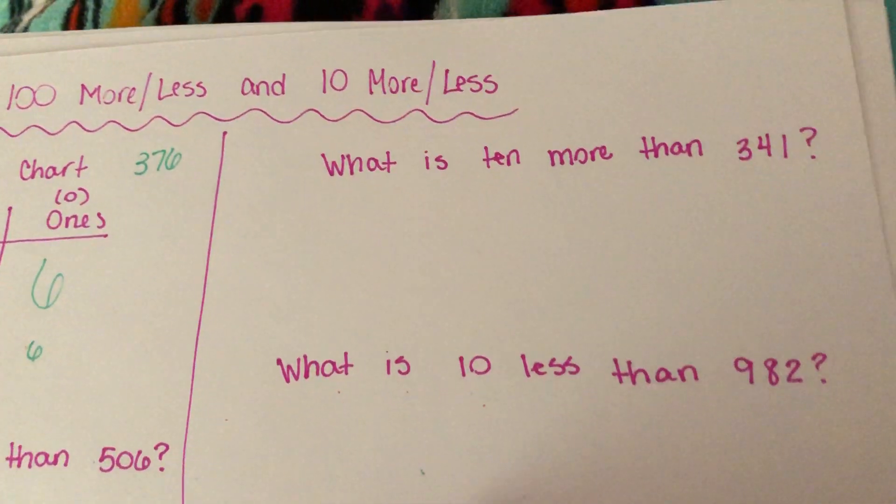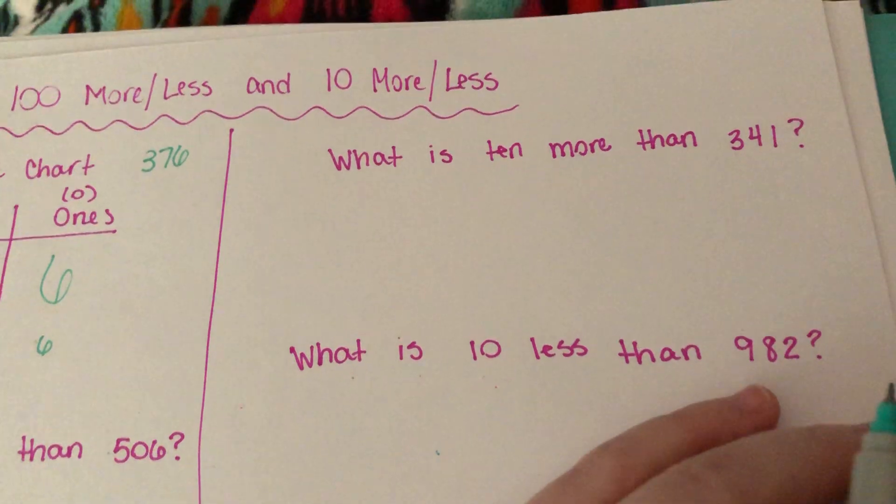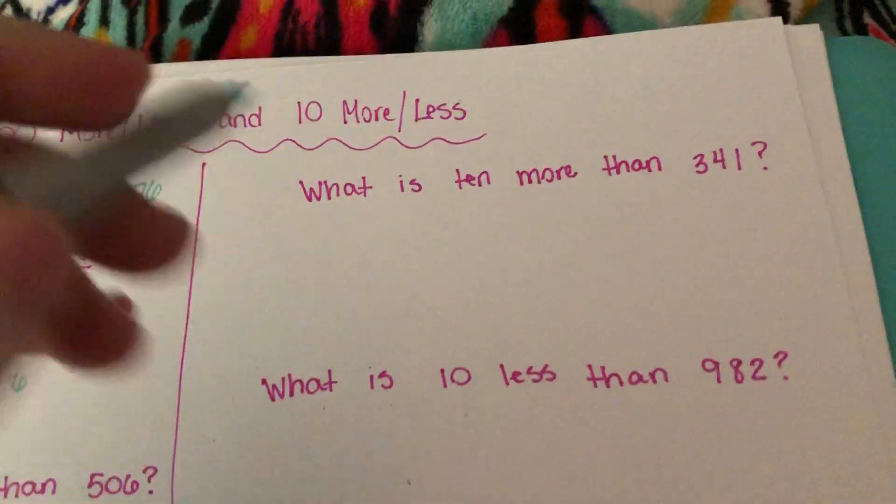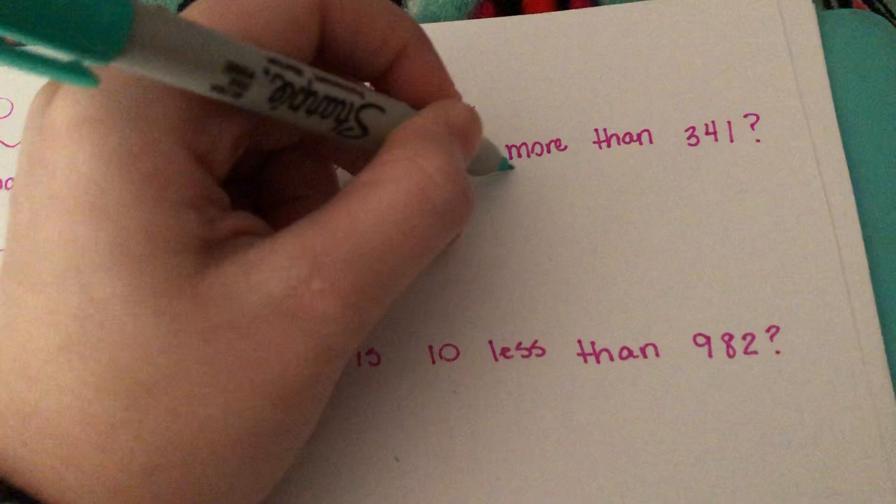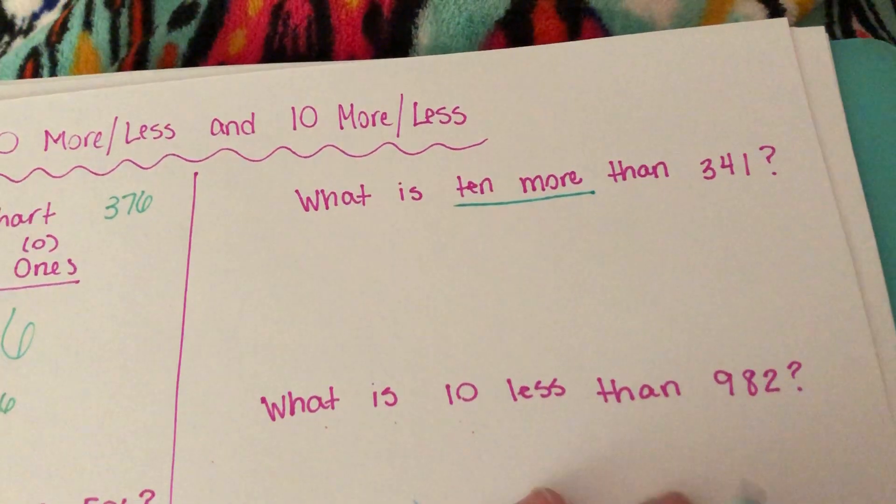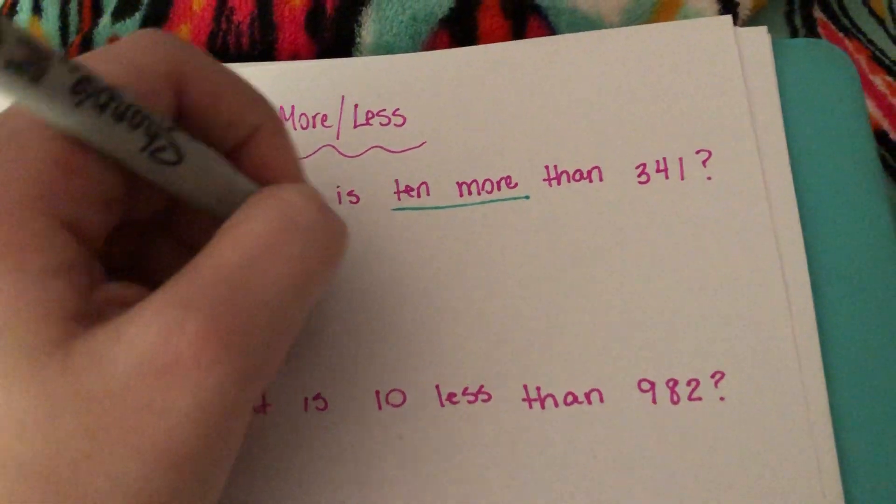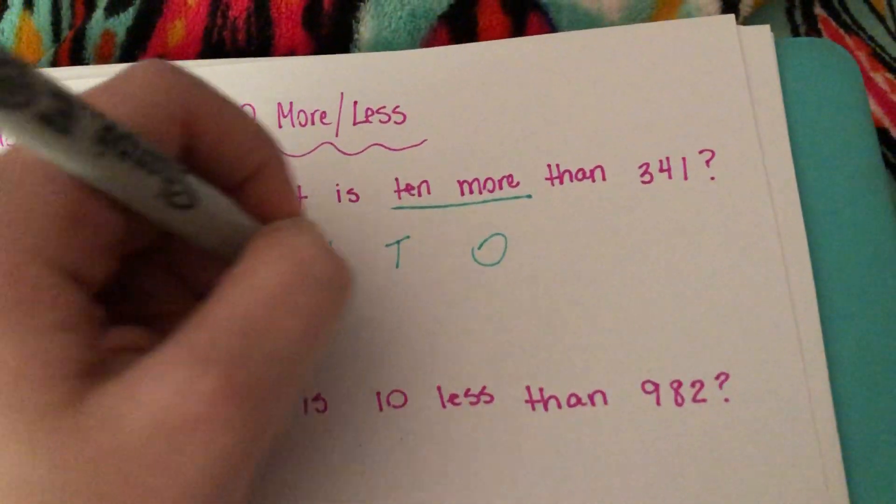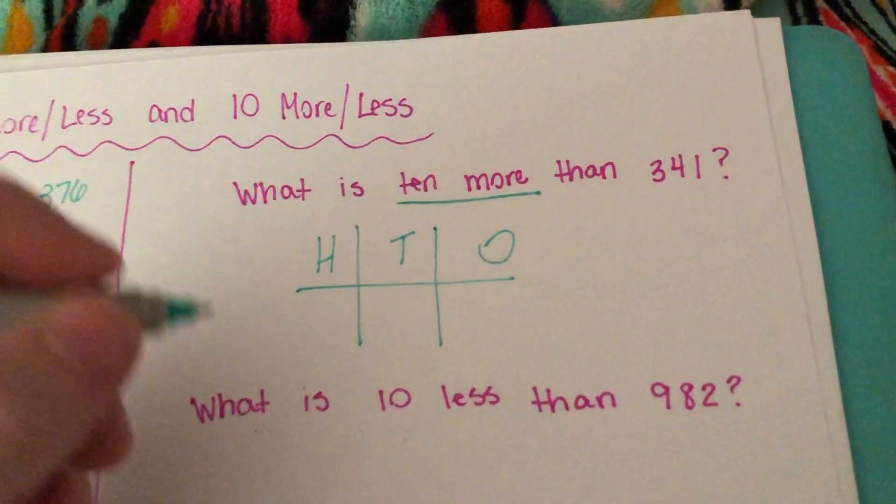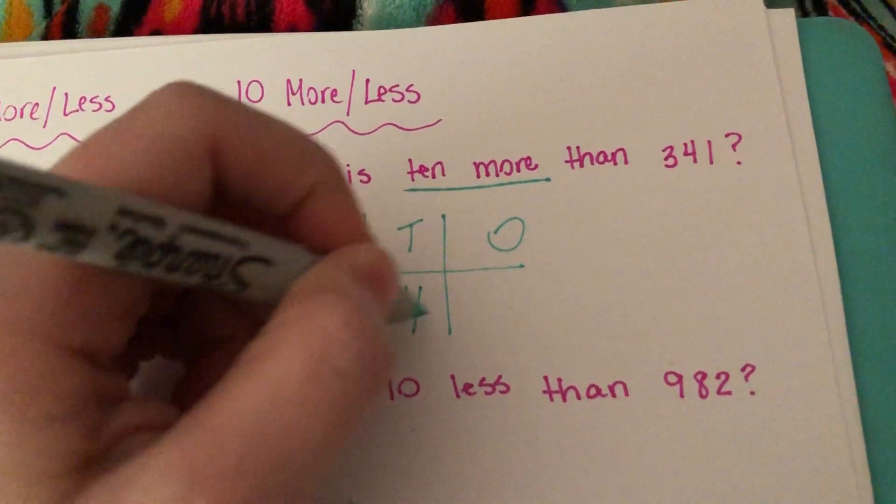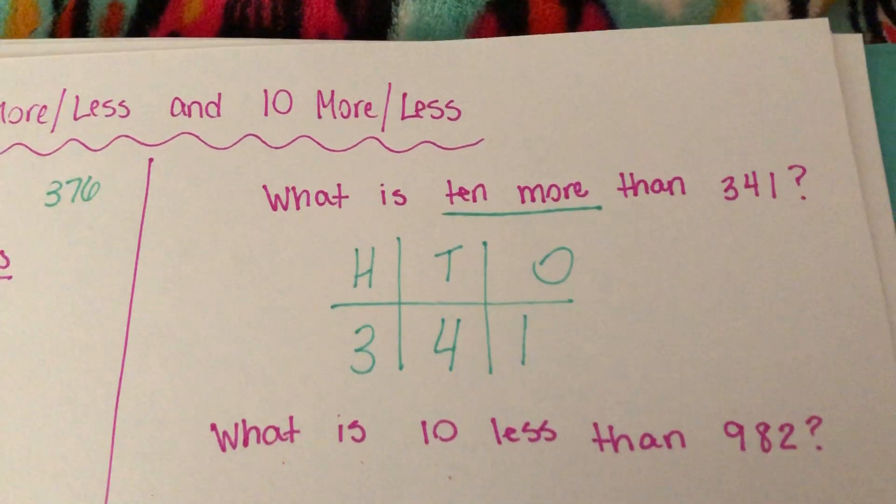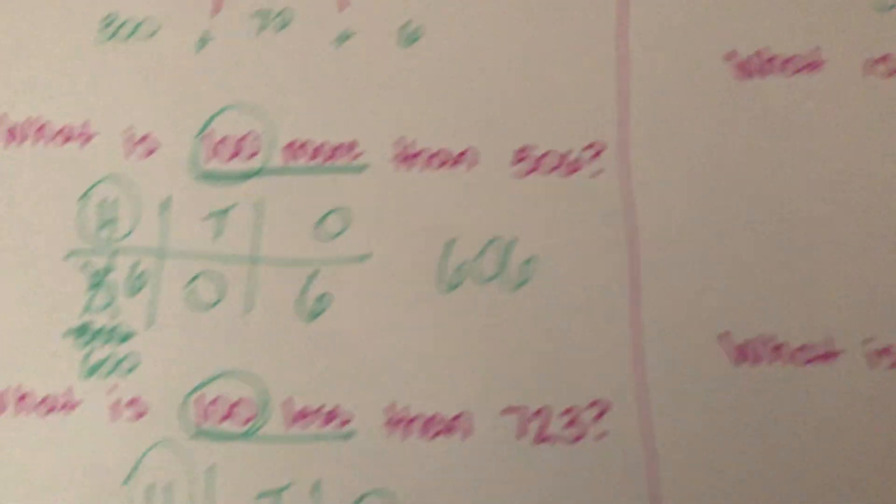So what is 10 more than 341? So I accidentally didn't write the number and I spelled out the word, but that may happen on the test, so it's okay that that happened. You need to underline what they're looking for. In this instance, we're looking for 10 more. All we do is we write our H-T-O, and we draw our lines, and we insert our number 341.